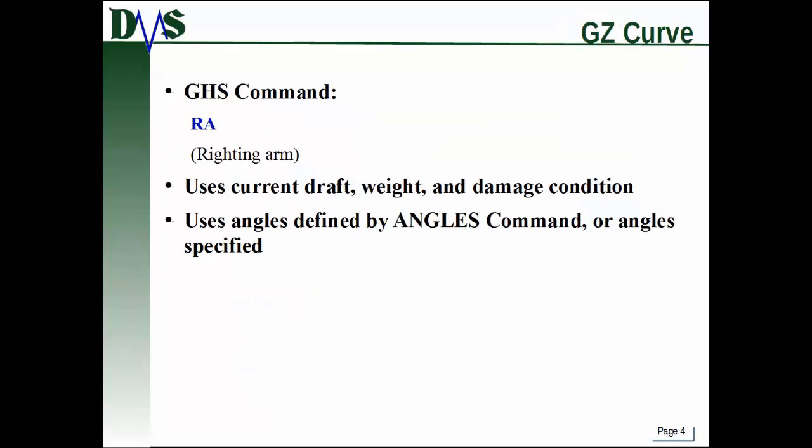Let's talk about the GZ curve and the GHS command. The command in GHS is RA, which stands for righting arm. It doesn't generate just one righting arm — it generates a whole set of them at a range of angles, which is your GZ curve. It uses the current draft, weight, and damage condition of your vessel at the point you execute the command. All of that information has to be set up beforehand. It uses the angles defined by the angles command as its default behavior, or you can override that with your own specified angles.